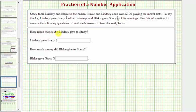First question is how much money did Lindsey give to Stacy? The second question is how much money did Blake give to Stacy? Well, notice that both Blake and Lindsey each won $300, and Lindsey gave Stacy 1/8 of her winnings and Blake gave Stacy 1/9 of his winnings.